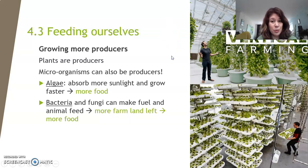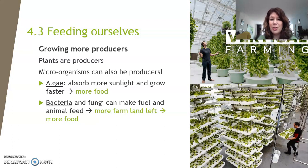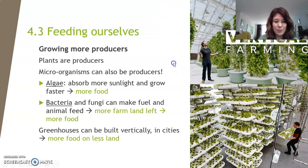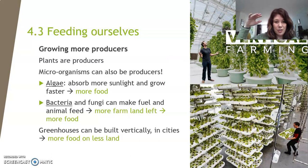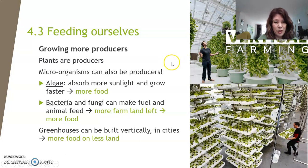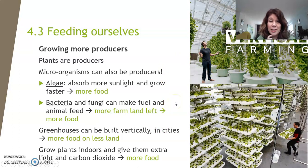Bacteria and fungi can make fuels, but they can also make food for animals. Usually you grow food for animals on land, but if bacteria make the food for the animals, humans can use that land to grow their own food. Greenhouses can also be built vertically — so upward — which means they don't use lots of land and space, but can grow vertically and produce a lot of plants. And we can grow plants indoors, giving them extra light and carbon dioxide.